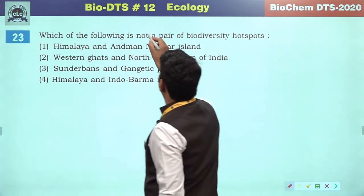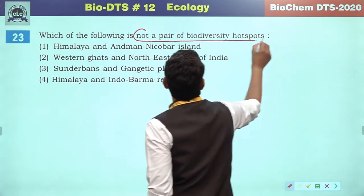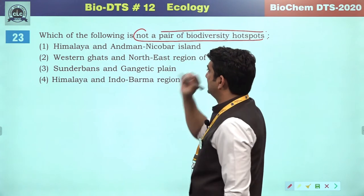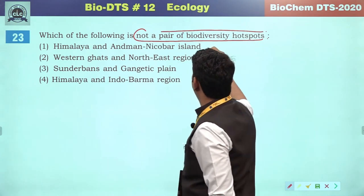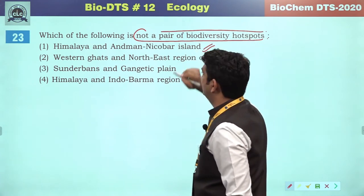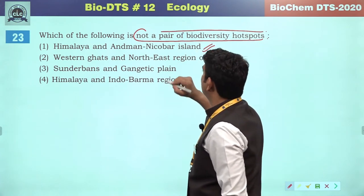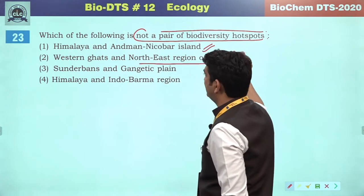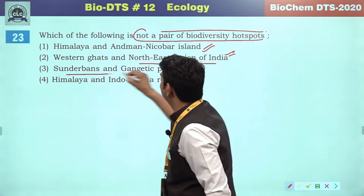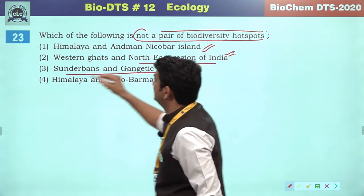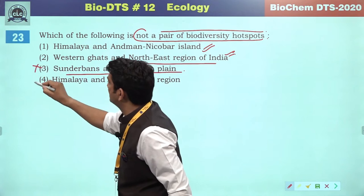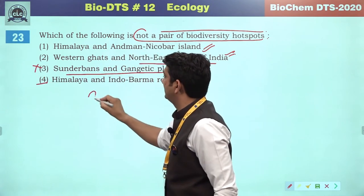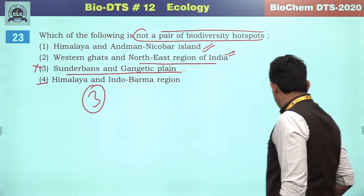Which of the following is not a pair of biodiversity hotspots? Himalayan and Andaman-Nicobar Island — definitely a hotspot. Western Ghats and northeast region of India — definitely a hotspot. Sundarbans and Gangetic plains are not hotspot areas. So the correct answer will be the third option.